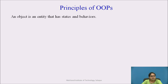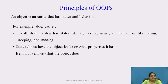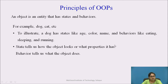An object is an entity that has state and behaviors. For example, a dog has states like age, color, and name, and behaviors like eating, sleeping, and running. State tells you the appearance of the dog — what its age, color, and name are — whereas behavior tells you what the dog does, such as eating, sleeping, and running. So state tells us how the object looks or what properties it has, whereas behavior tells what the object does.